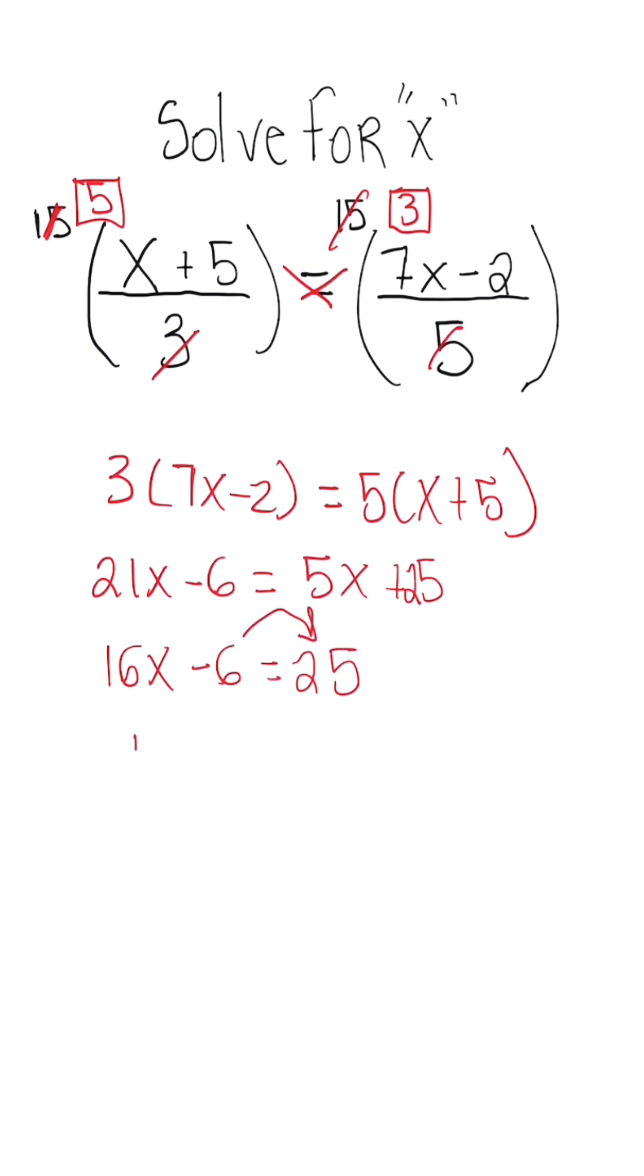We're going to add 6 on both sides. So we have 16x is equal to 31. And then after we divide, x is going to be equal to 31 over 16. So just be mindful of the proportions rules and how to solve when we have a problem like this.